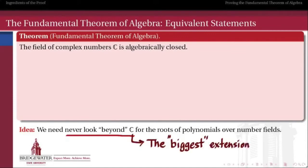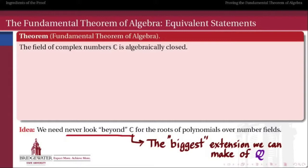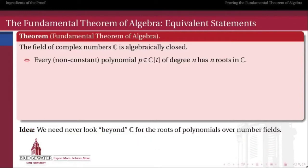Let's look at the different ways to state the fundamental theorem of algebra. The idea is that we never need to look beyond the complex field to find the roots of polynomials whose coefficients are complex numbers. Somehow the complex numbers are the biggest extension we can make of, for example, the rationals. The fundamental theorem of algebra can be stated as: the field of complex numbers is algebraically closed — any polynomial with complex coefficients will have all of its roots be complex.